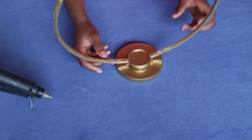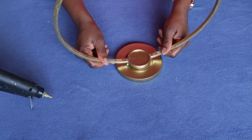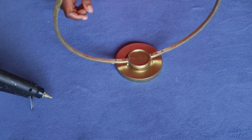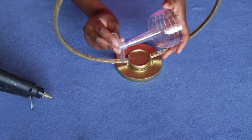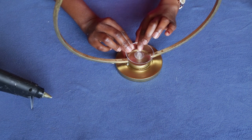The good thing with glue gun is it dries very fast. So the next thing, I'll take my base from my champagne glass and I'll glue it on top here.